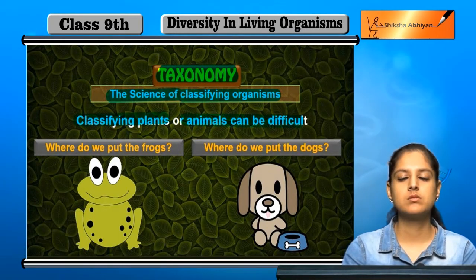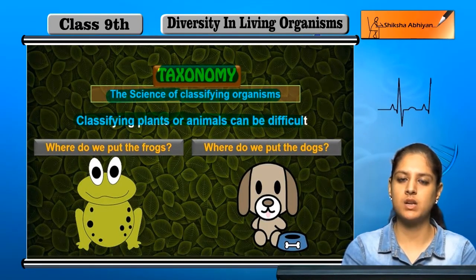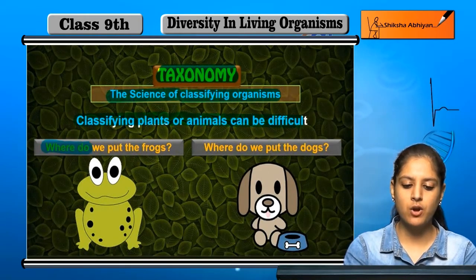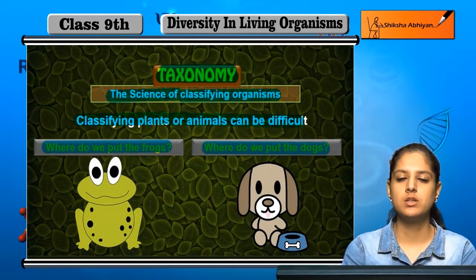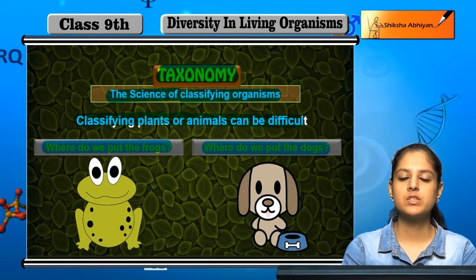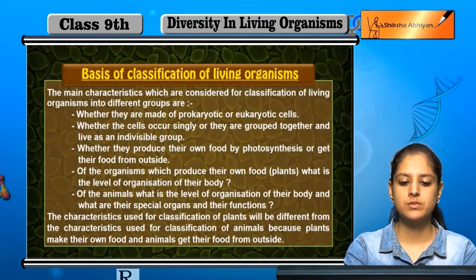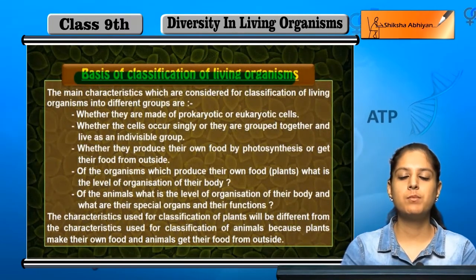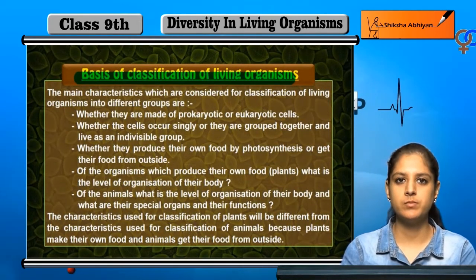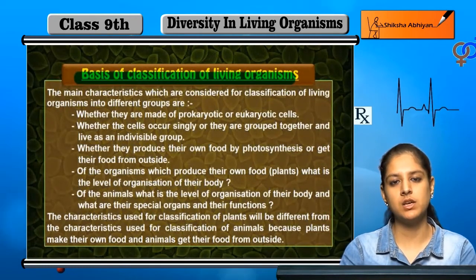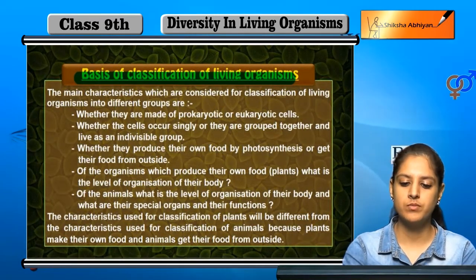The classification of plants and animals can be difficult. We need to determine what basis to use — for example, where do we classify frogs or dogs? That is called the basis of classification of living organisms. With 2.5 million organisms, we need predefined criteria. We look at similarities and group them accordingly, based on some main characteristics.